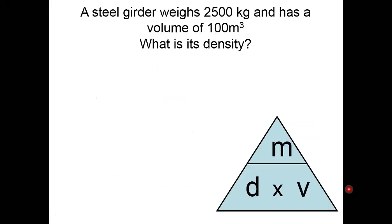If you look at some of the examples, a steel girder weighs 2500 kilograms and has a volume of 100 meters cubed. What is its density? So this means we are calculating its density.